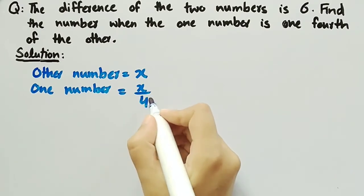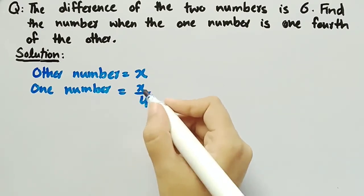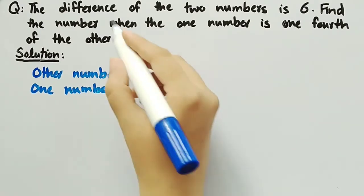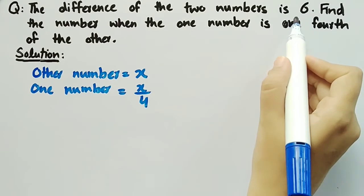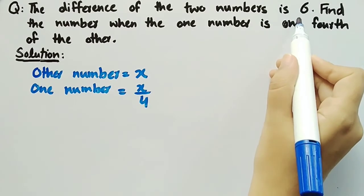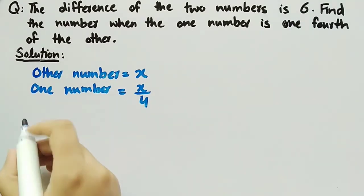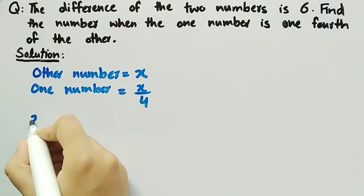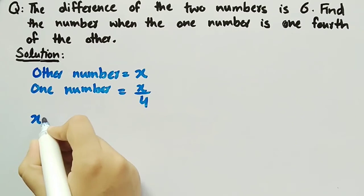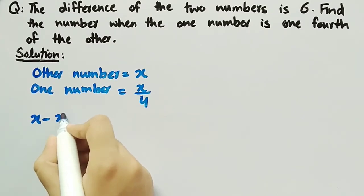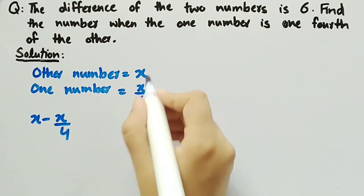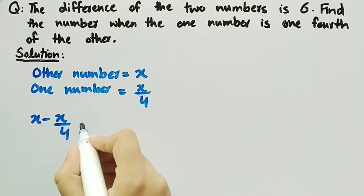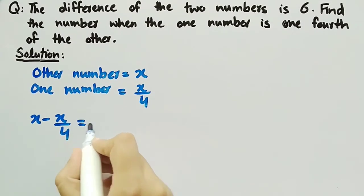It is also given that the difference of these two numbers is equal to 6. So we can write x minus x by 4 — that is the difference of these two numbers — equal to 6.